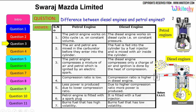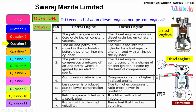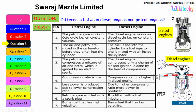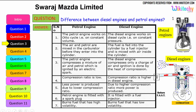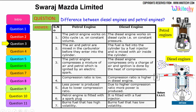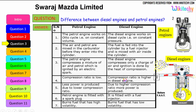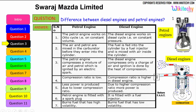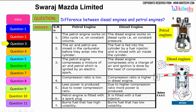The petrol engine compresses a mixture of air and petrol, which is ignited by an electrical spark. The diesel engine compresses only a charge of air and ignition is done by the heat of compression. The petrol engine has a lower compression ratio, whereas the diesel engine has a higher compression ratio — therefore the petrol engine produces less power and the diesel engine produces more power.